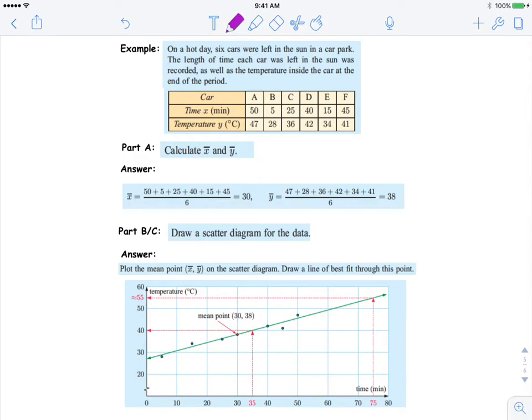So our time is going to be our x variable, so that's going to go on our x-axis - that's your independent variable. And then your temperature, your y-axis, your independent variable will go on the y-axis.